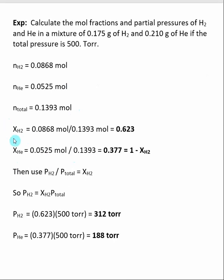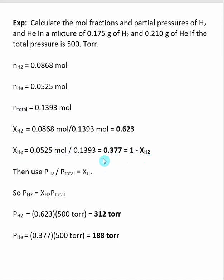Next, we find the mole fraction due to hydrogen: that's the number of moles of hydrogen divided by the total number of moles. We get a mole fraction for hydrogen of 0.623, which tells us that hydrogen makes up 62.3% of the total moles. We also want the mole fraction of helium, which can be found two ways: take moles of helium divided by total moles, or take 1 and subtract the mole fraction of H2. There may be a subtle difference between these two forms due to rounding error, but both give us the mole fraction of helium.